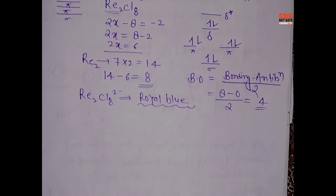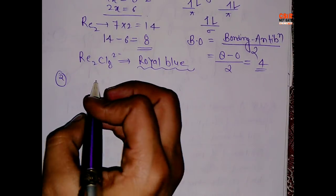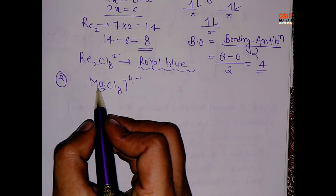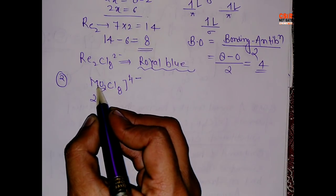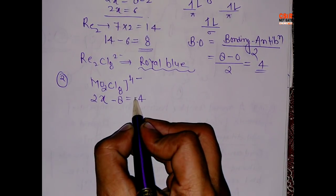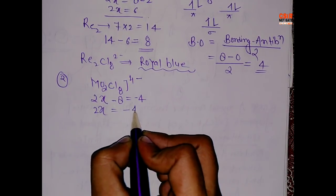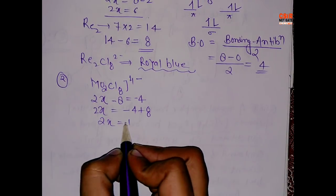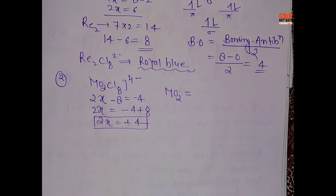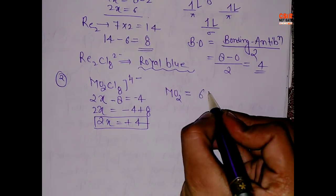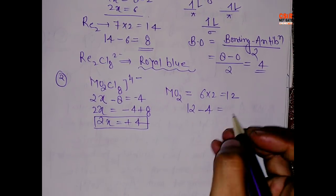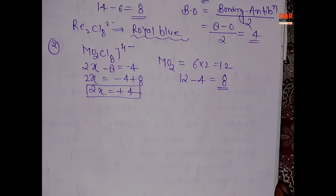Let's take another example: Mo₂Cl₈⁴⁻. Again, find the oxidation state — let's say molybdenum is x. So 2x − 8 = −4, giving 2x = +4. Molybdenum is in the chromium family so it has 6 valence electrons: 6 × 2 = 12. Then 12 − 4 = 8 electrons to fill.